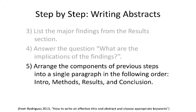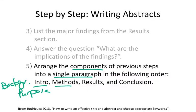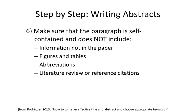Once you've answered those main questions and have those pieces of information, arrange the components into a single paragraph in the order we've talked about: first the intro — purpose and background — then the methods, results, and conclusion with implications. Once you've put that into paragraph form, do a couple of checks. Make sure the paragraph is self-contained — if you just read that single abstract, you get all the main information you need. Make sure you're not including anything that doesn't match the paper, and don't include any figures or tables in the abstract — instead summarize them.